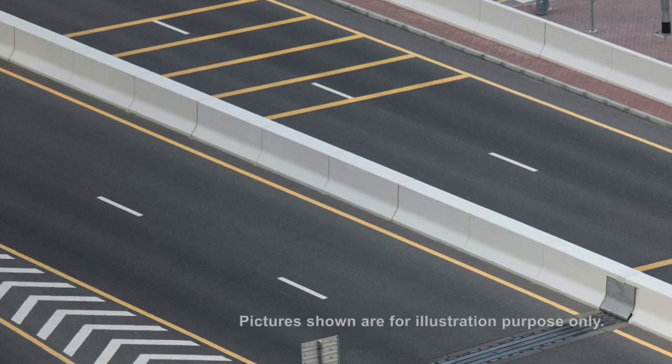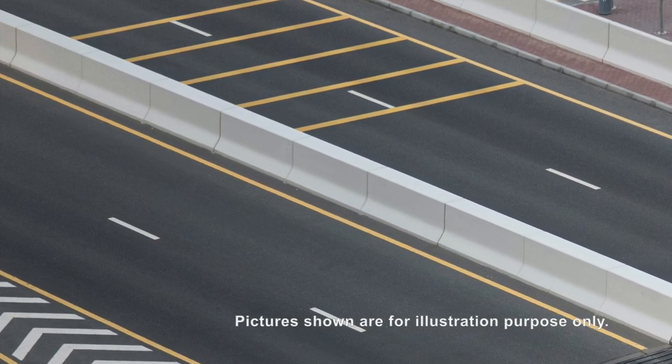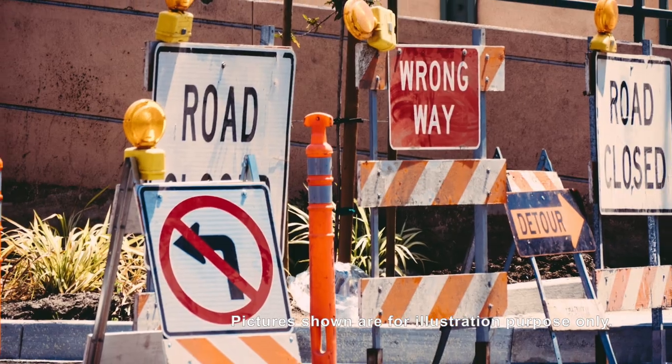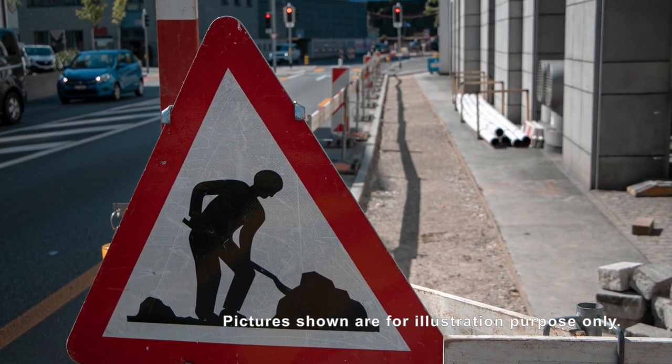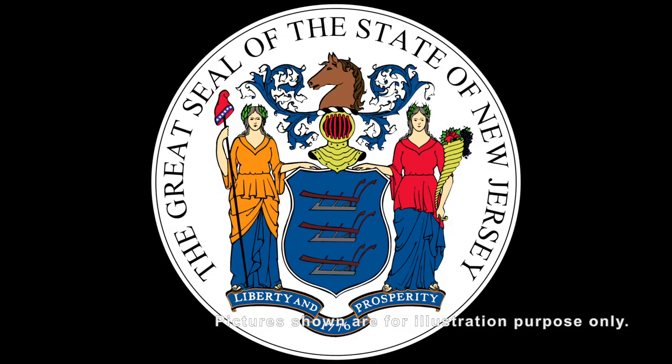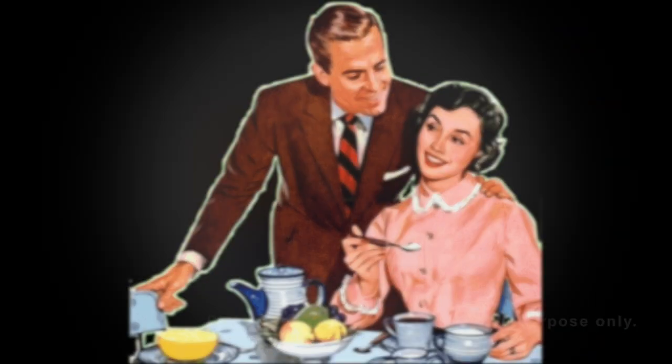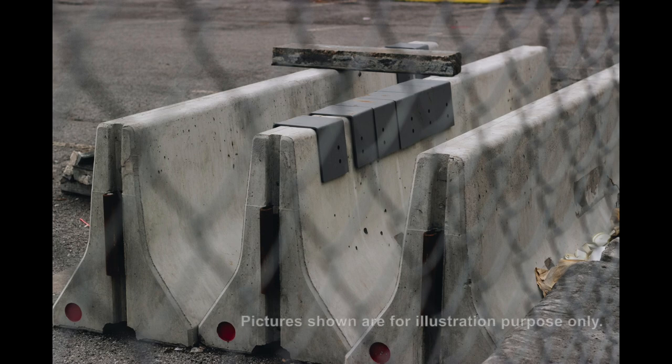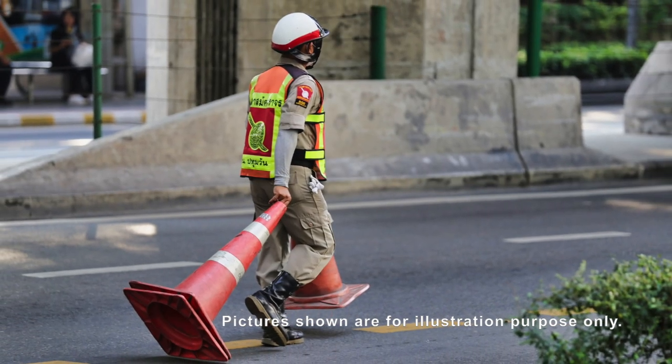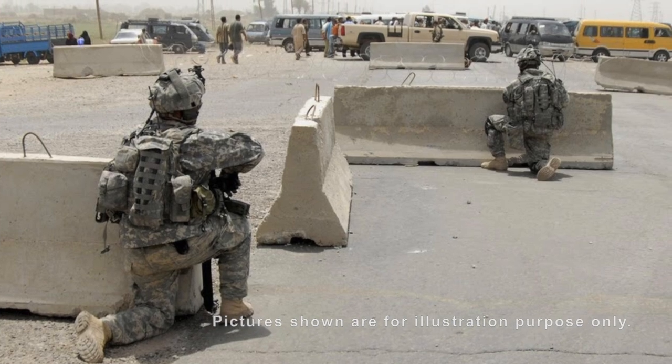A Jersey barrier is a modular concrete structure employed to separate lanes, reroute traffic, and protect pedestrians and workers during highway construction. They are named after the U.S. state of New Jersey, which first started using it in the 1950s. Eventually, they became useful blockade devices employed in urban areas and military operations for security purposes.